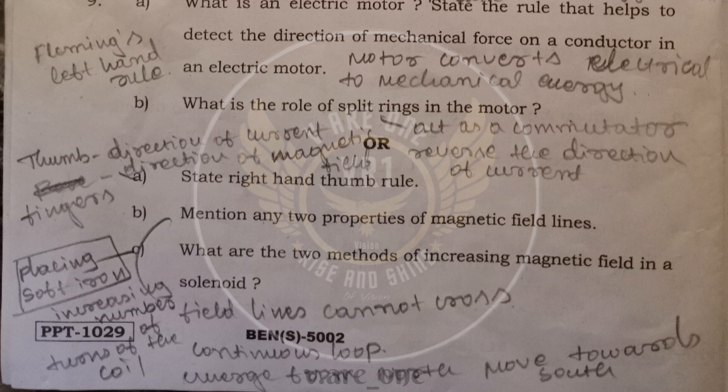And we have option for this question. State a right hand thumb rule. Mention any two properties of magnetic field lines. And what are the two methods of increasing magnetic field in a solenoid? Right hand thumb rule. According to right hand thumb rule, the thumb represents the direction of current. And other fingers which is curved around the conductor represents the direction of the magnetic field.